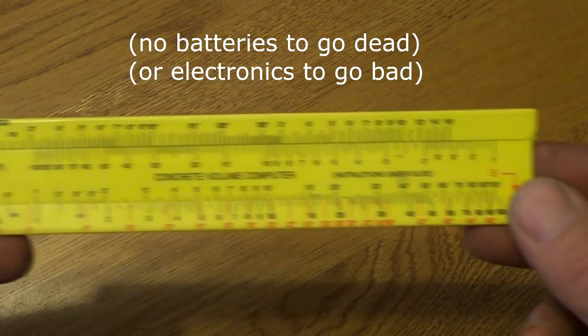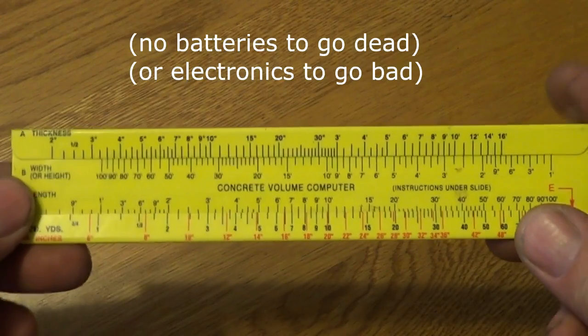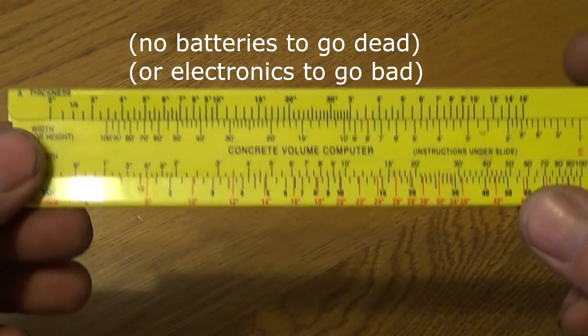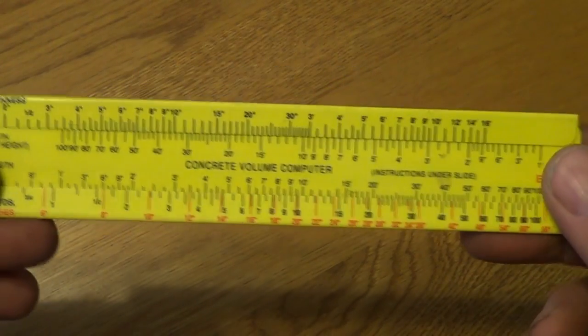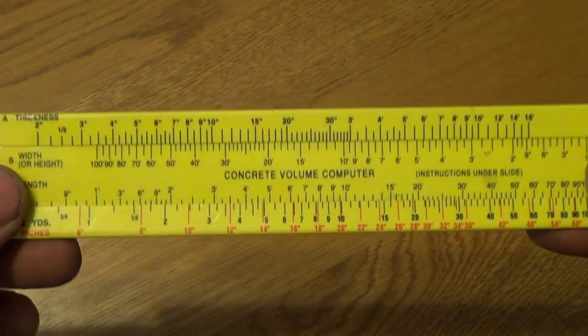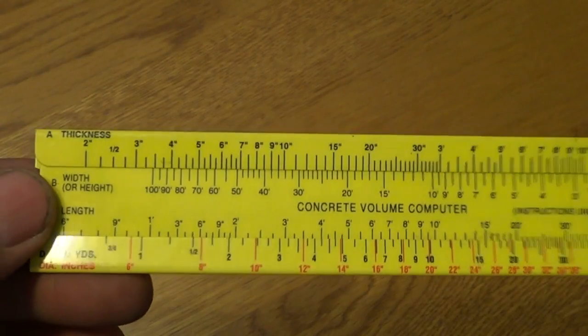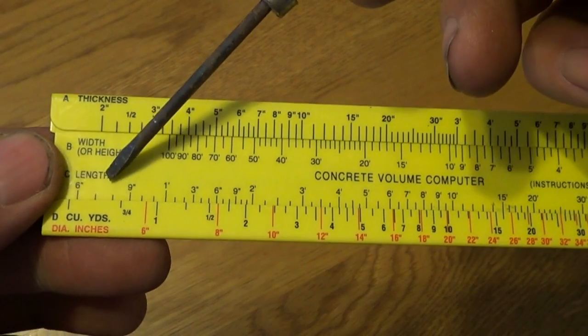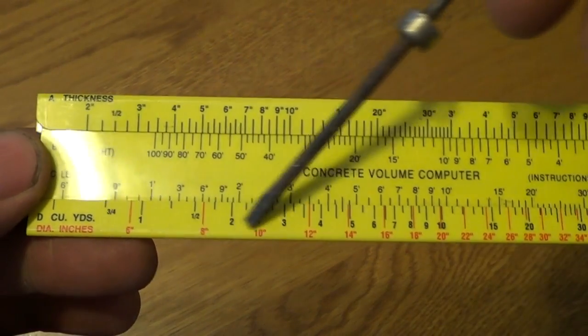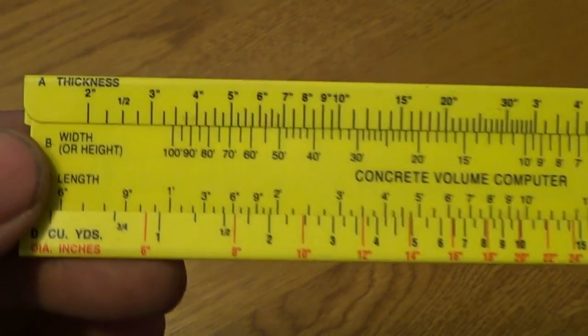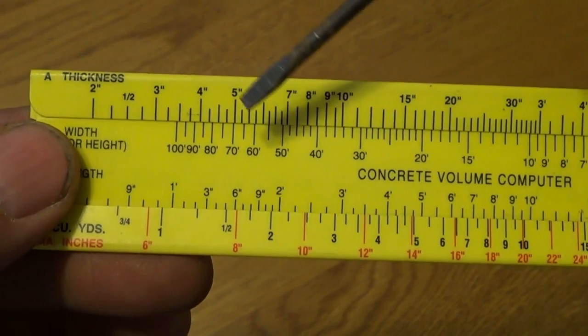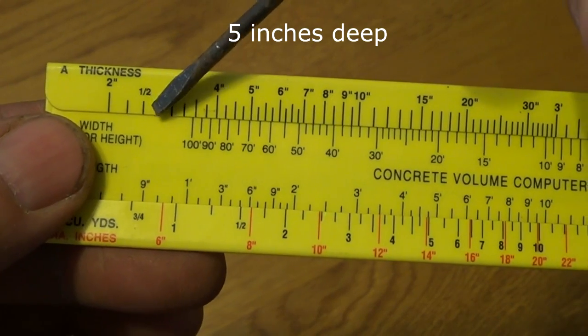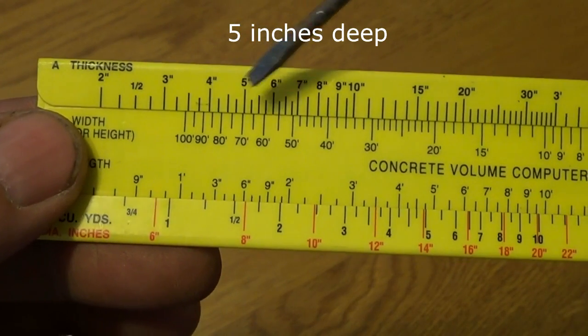Now this is what is called a concrete calculator. I've been using it for 50 years. My father used it. Everybody uses it. I don't know anybody who doesn't. I always have a couple in the truck. And we're going to take a look at it. Over here on this scale we have the thickness. We have the height or width and the length. And then it tells you how many cubic yards you need. So how I use it on this example is I know over here is 5 inches. See? 2, 2 and a half, 3 inches, 4 inches, 5 inches.